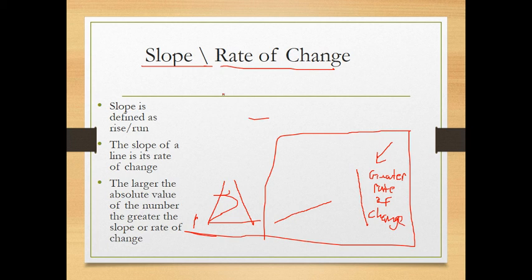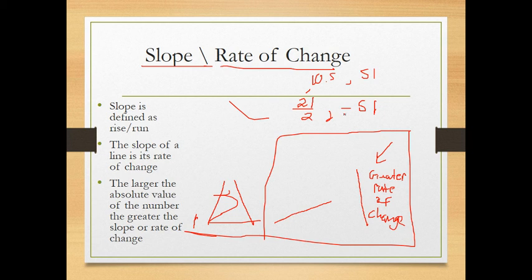For example, comparing 21/2 and −51: 21 divided by 2 gives 10.5, and the absolute value of −51 is 51. Since 51 is bigger than 10.5, the slope of −51 indicates the greater rate of change.